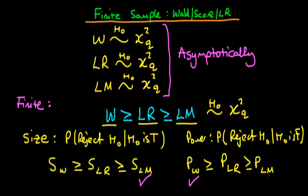So on the basis of these two properties, which of these statistics should we actually use? Well, it depends on the circumstance. If the size of the statistical test is important, then perhaps we use the LM statistic. Whereas if it's the power, then perhaps we use the Wald statistic. And if we're ambivalent between these two properties, perhaps we'll use the LR statistic. There's no simple rule for deciding between these three test statistics — it's going to be guided by the exact circumstances.